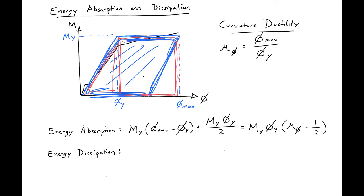So our energy dissipation we can find then to be My times (phi_max minus phi_y). And you can see that we're taking off an equal triangle here, so we just lose this second term.